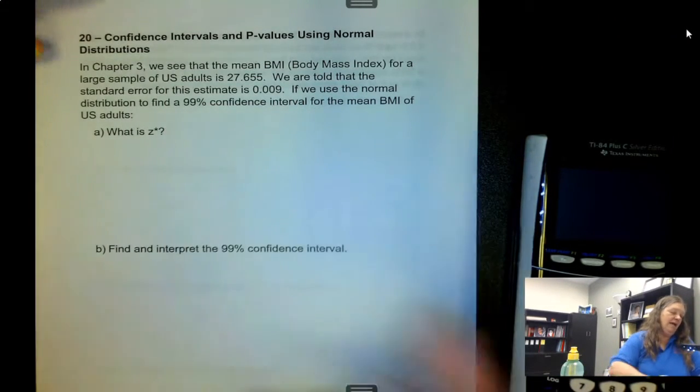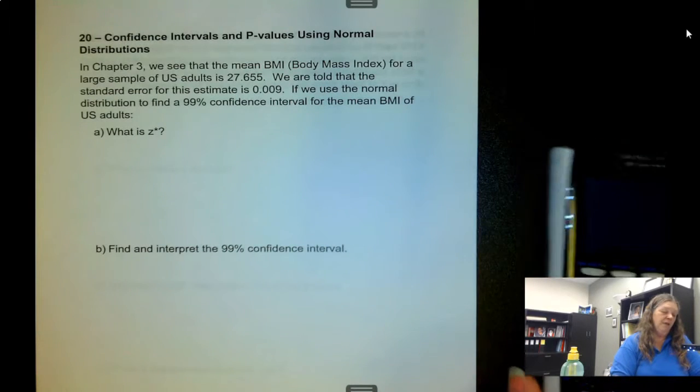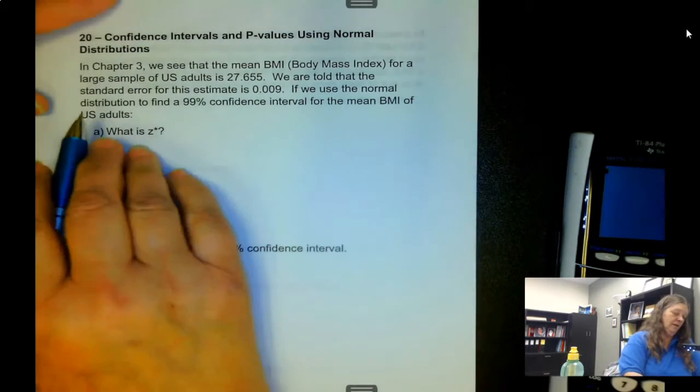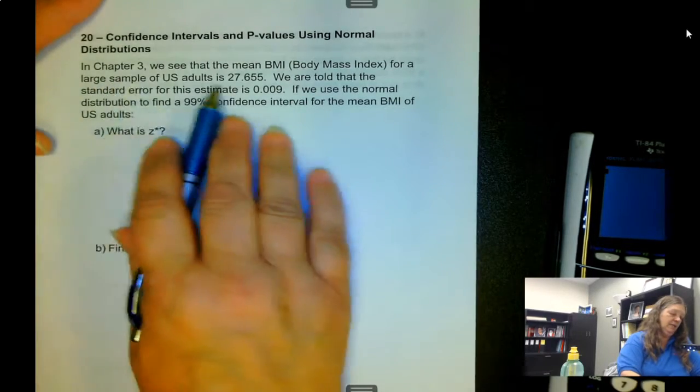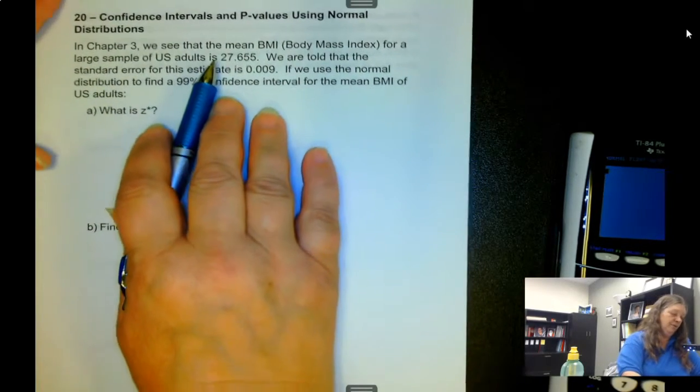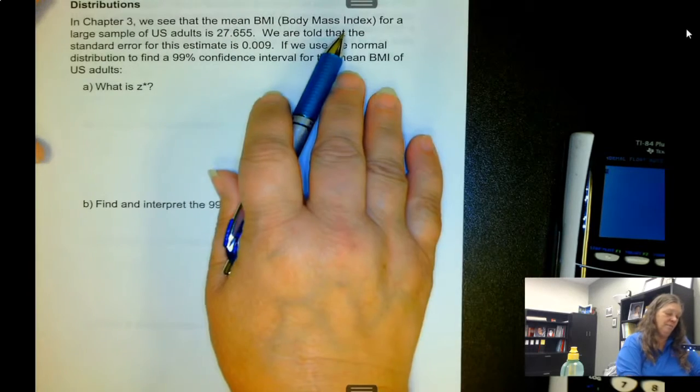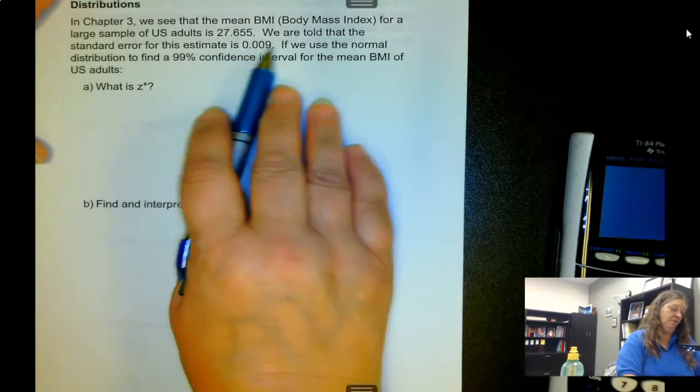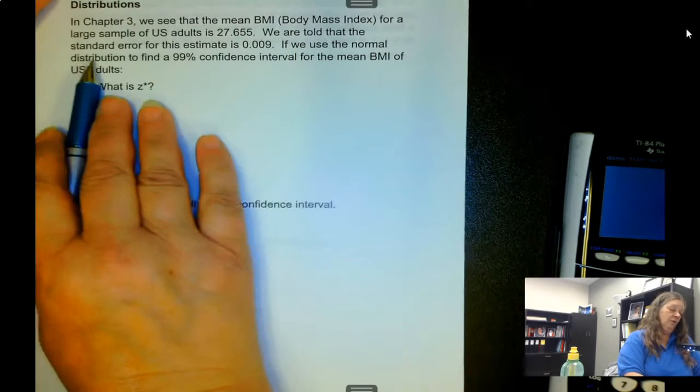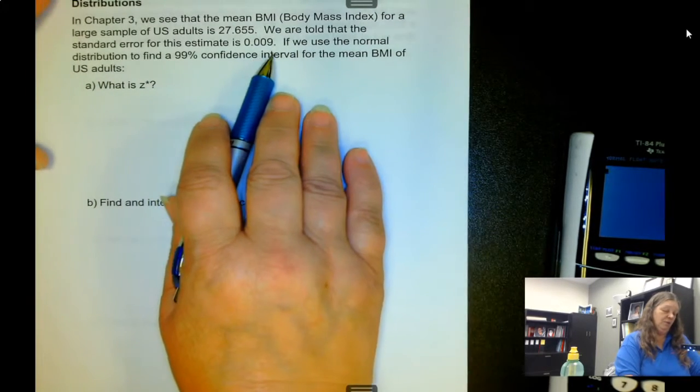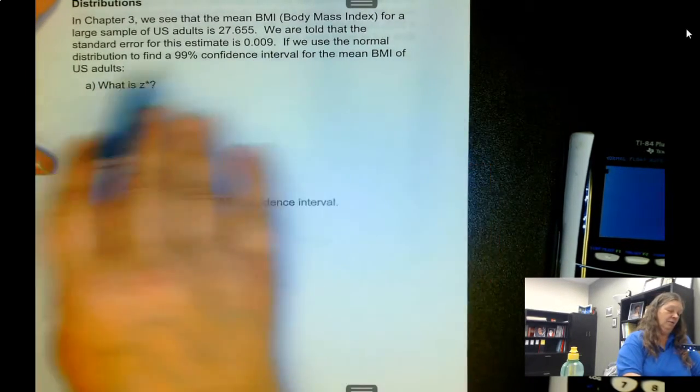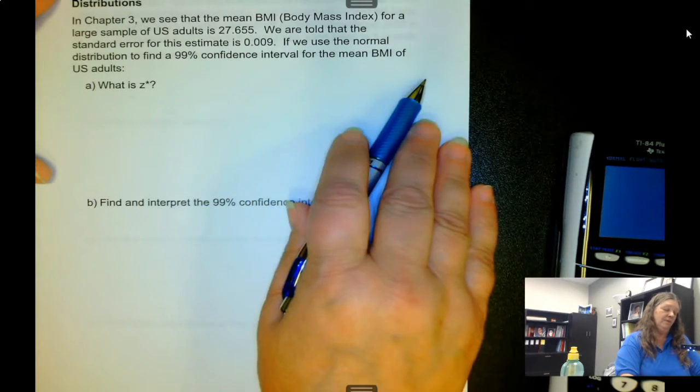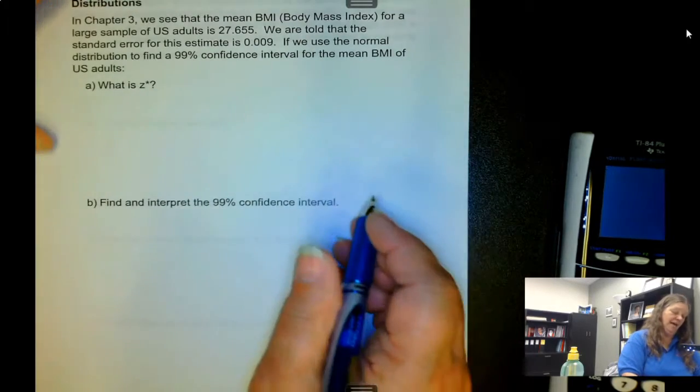Okay, now we're going to look at how to find confidence intervals and p-values using the normal distribution. In Chapter 3, we saw that the BMI for a large sample of US adults is 27.655. We're told that the standard error is 0.009. We use normal distribution to find a 99% confidence interval for the mean BMI of US adults.